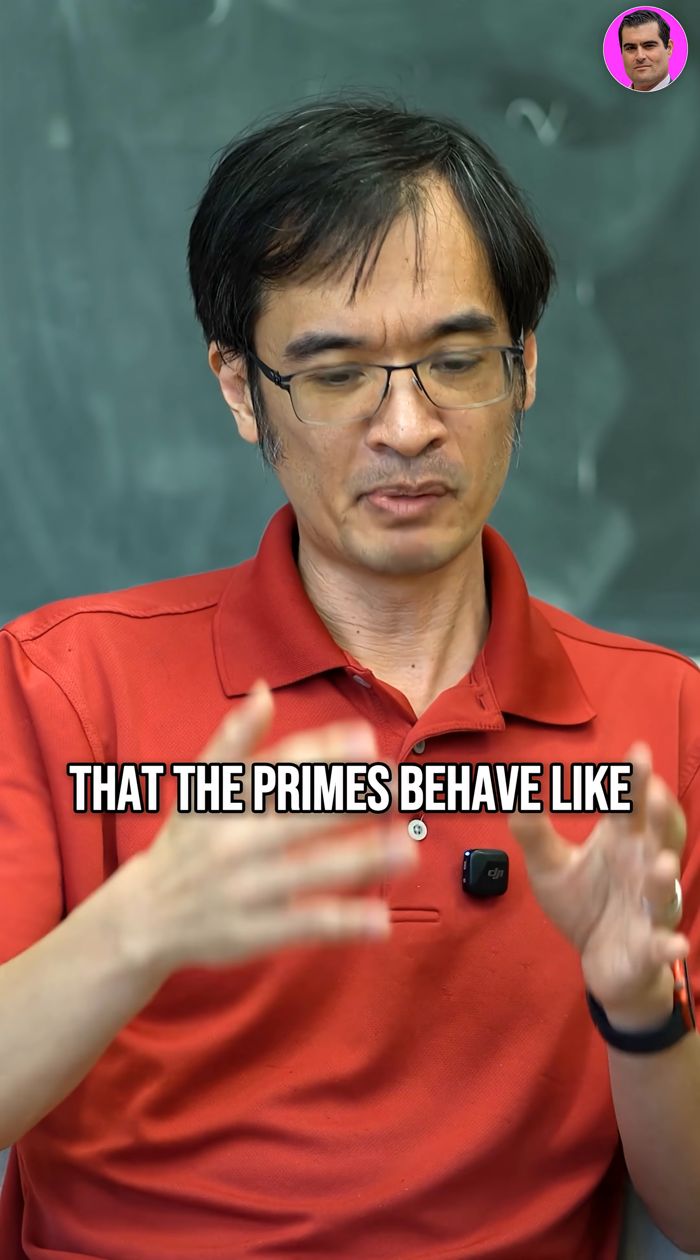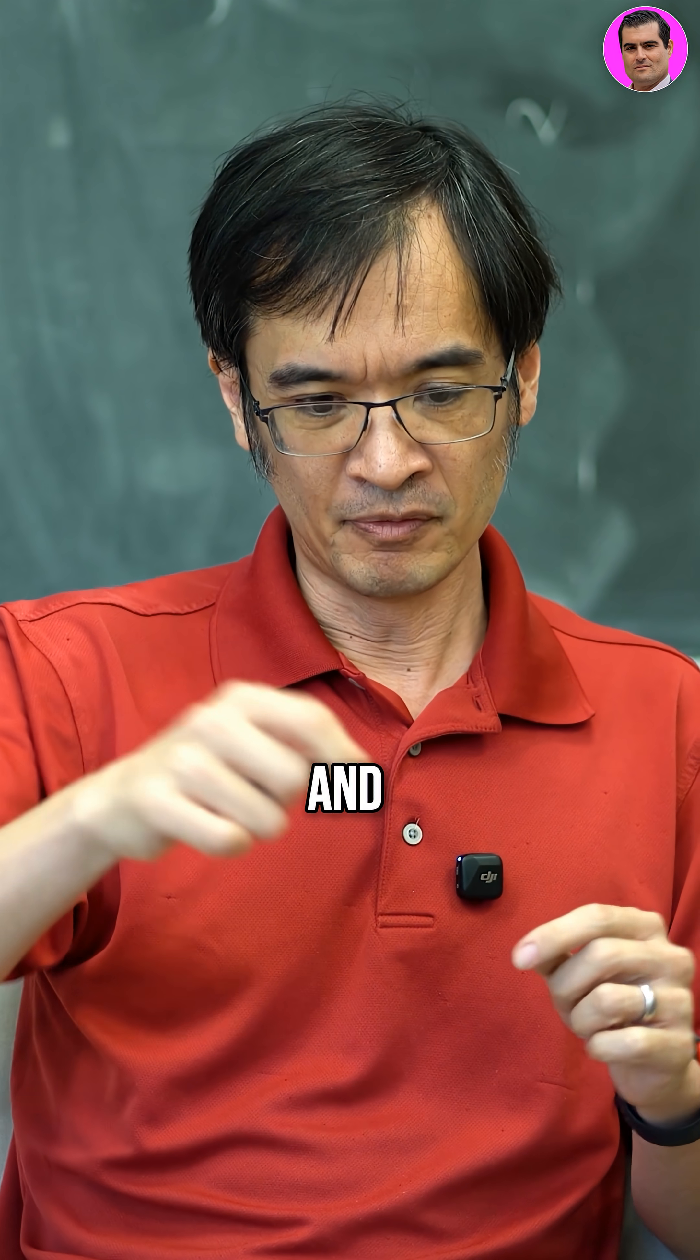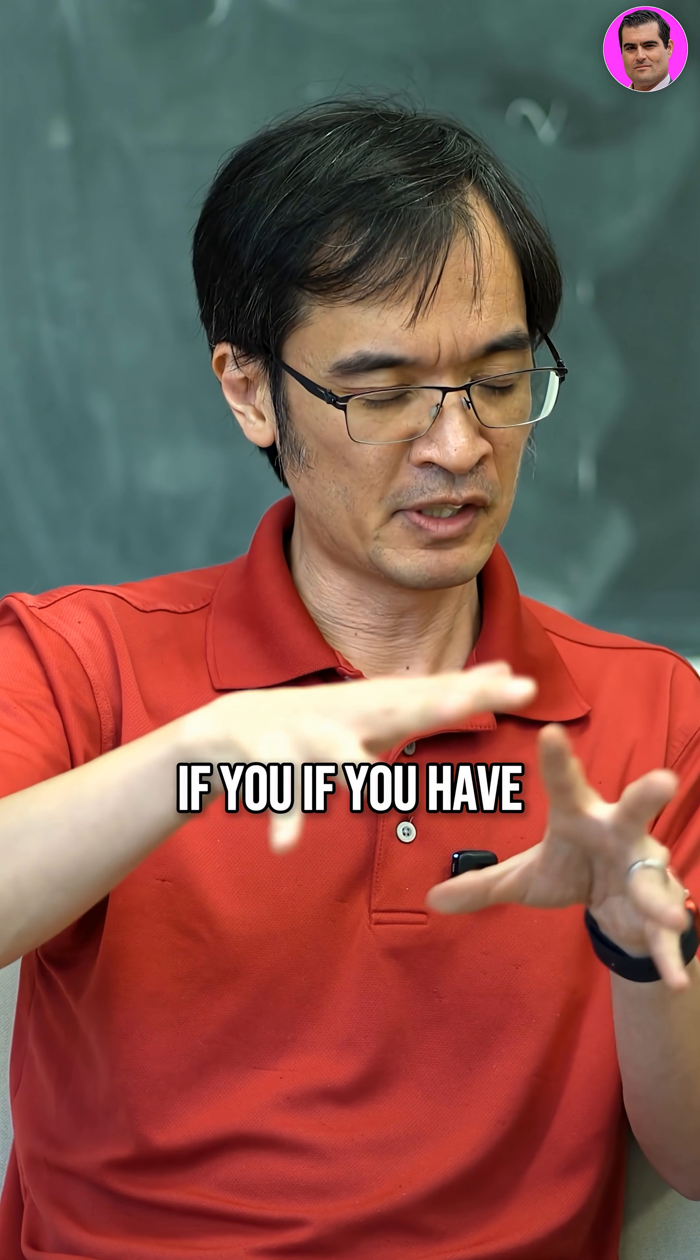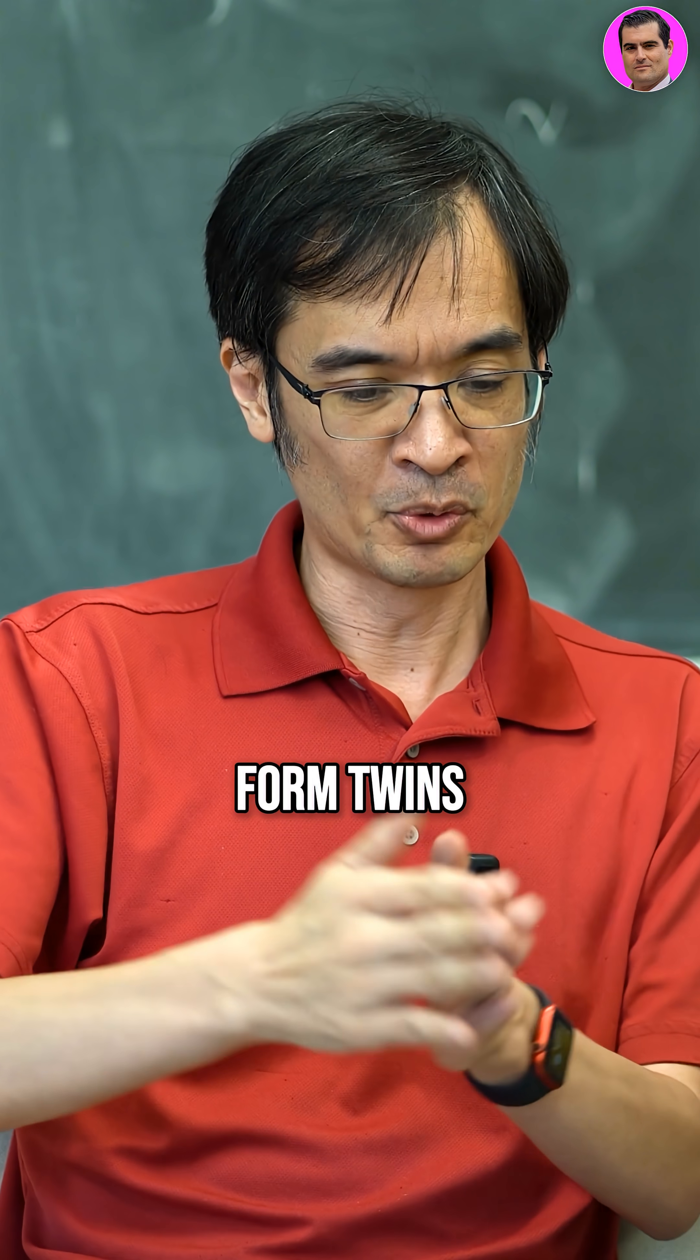We have this prediction that the primes behave like, basically like a random sequence of numbers. And random sequences, if you have a random sequence of the same density as the primes, they will form twins infinitely often.